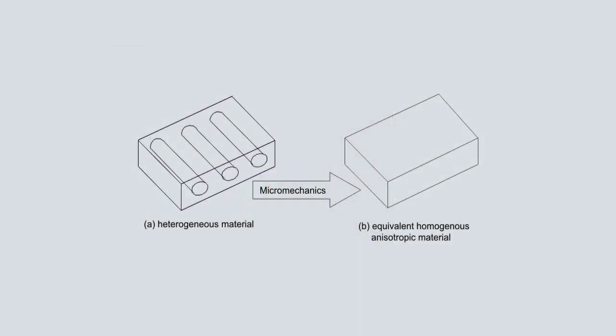In this example, the fiber is elastic and the matrix is viscoelastic. Since the matrix is also isotropic, we can use Abaqus as-is.